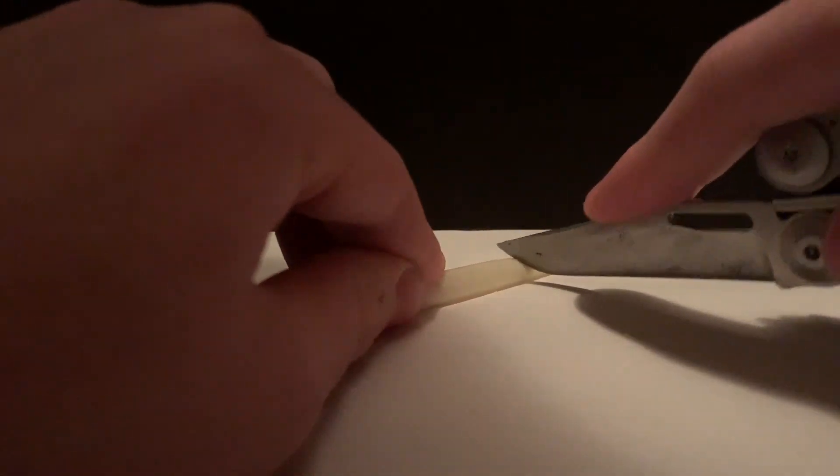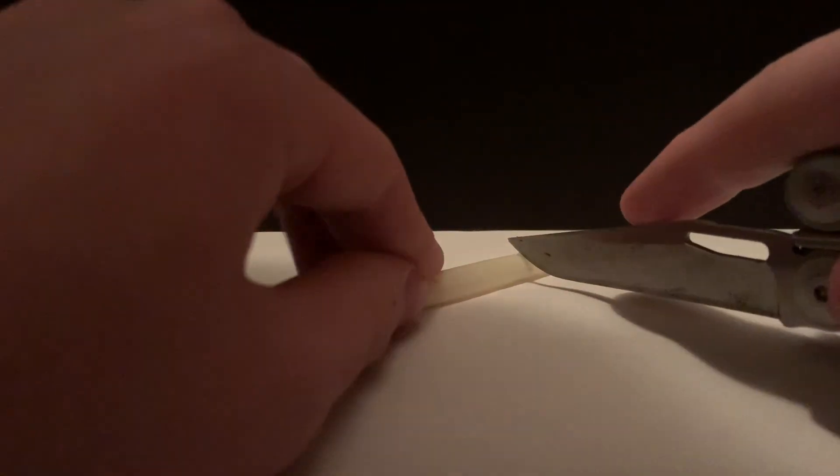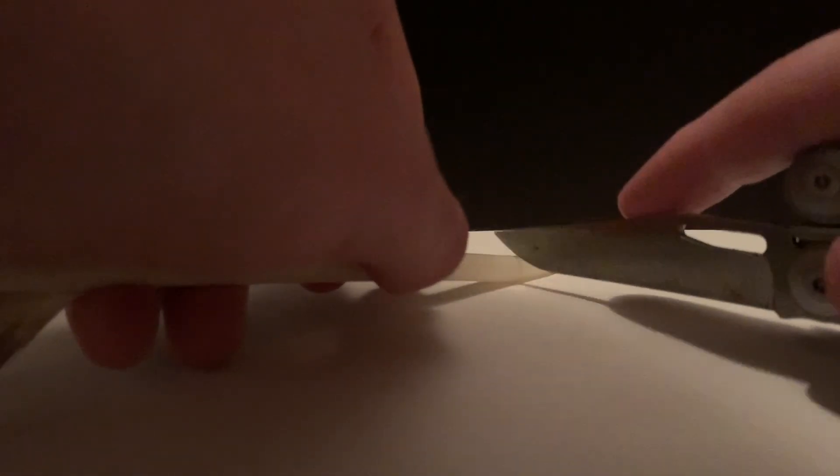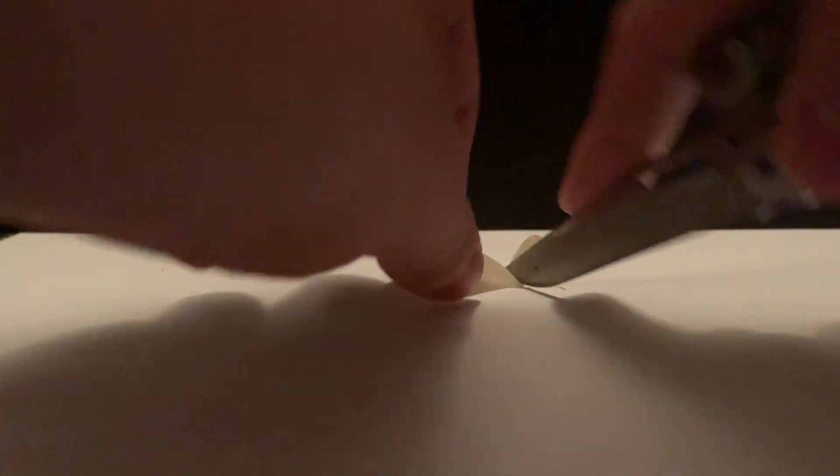So here we're going to make a perpendicular cut to the feather. Probably should have let it soak a bit longer. It's kind of difficult to cut.